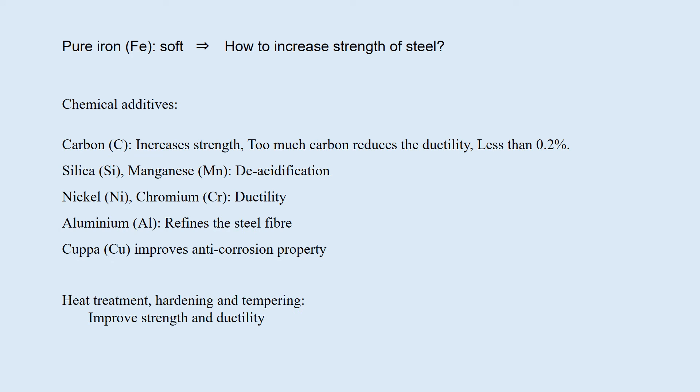The main chemical component of steel is pure iron, Fe, which is relatively soft. Strength can be improved by carbon, C, but too much carbon reduces ductility and its amount should be less than 0.2%. Silicon Si and manganese Mn make deacidification. Nickel Ni and chromium Cr provide ductility. Aluminium Al refines the steel fiber, and copper Cu improves anti-corrosion property. Heat treatment, hardening, and tempering can also improve strength and ductility of steel.